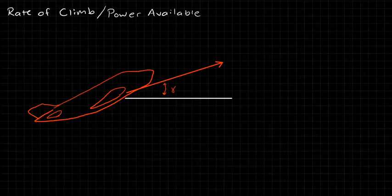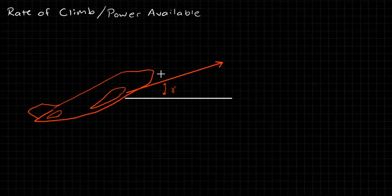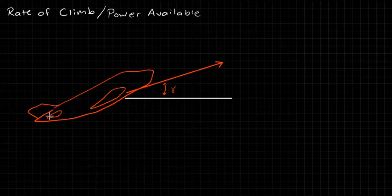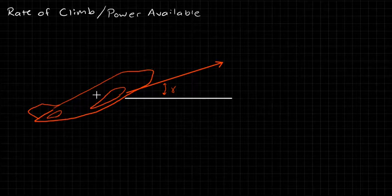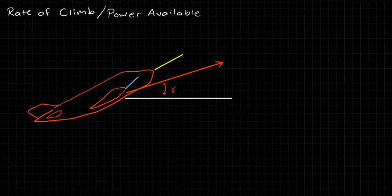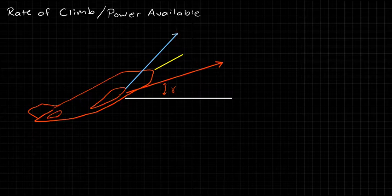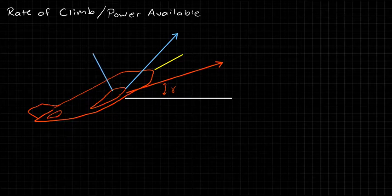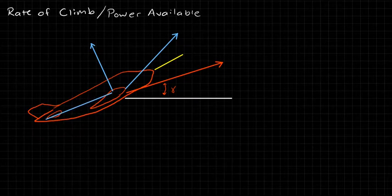We're going to have some other things here, which I'll do in blue to avoid confusion. We have also the fuselage reference line, which I'll do in yellow, coming out looking something like this. And then we have our thrust, angled like this — and again, these angles are exaggerated. Our lift is going to be perpendicular to the free stream velocity, our drag is going to be parallel to the free stream velocity, and our weight is going to point straight down.